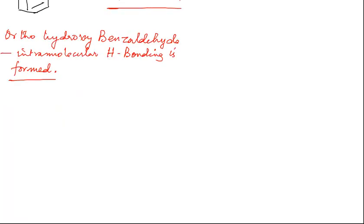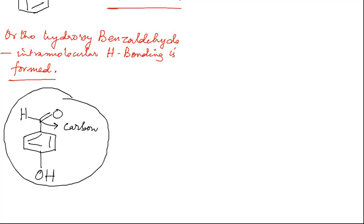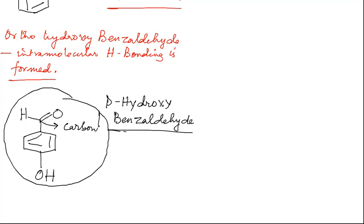Now if we discuss the case of Para-Hydroxybenzaldehyde — Para-Hydroxybenzaldehyde has a shape like this. In Para-Hydroxybenzaldehyde there is no formation of Intra-molecular Hydrogen bonding. The Hydrogen bonding that can be formed in Para-Hydroxybenzaldehyde is only Inter-molecular Hydrogen bonding.